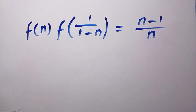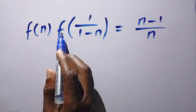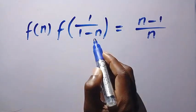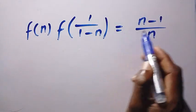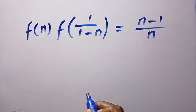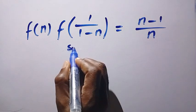Good day viewers, you are welcome. We are going to solve a functional equation: f(n) multiplied by f of 1 over (1 minus n) equals (n minus 1) divided by n. To solve this problem, let's start with the solutions and find f(n).